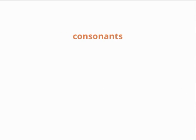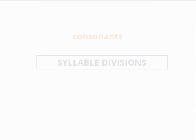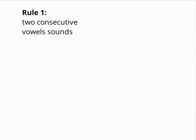Now let us consider how the consonants relate to syllable divisions. There are three main possibilities for how a syllable can connect to the next. First, two consecutive vowel sounds can be next to each other — those include vowels and diphthongs.